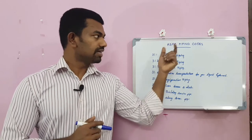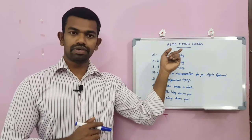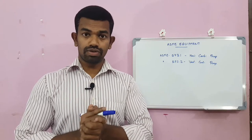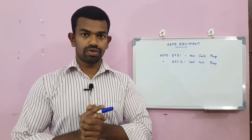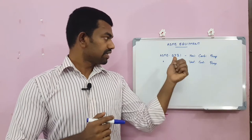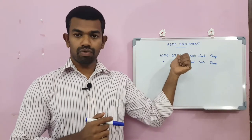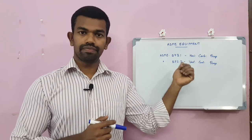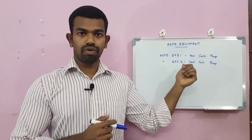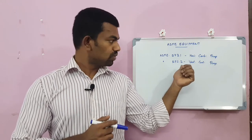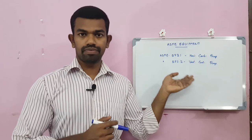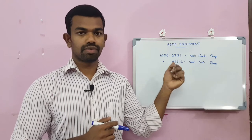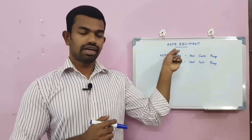These are the ASME piping codes. Now for ASME codes for rotating equipment: 73.1 covers horizontal centrifugal pumps and 73.2 covers vertical centrifugal pumps.